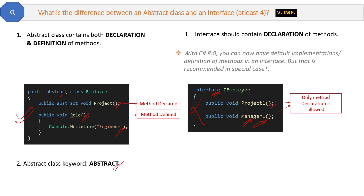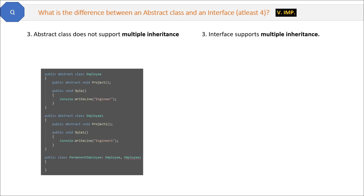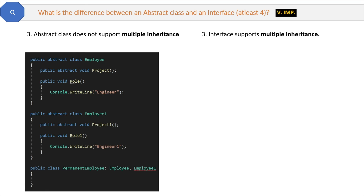One very important difference is that abstract classes do not support multiple inheritance in C#, whereas interfaces support multiple inheritance. Let me show you in code — when we try multiple inheritance via abstract class, we get a compile-time error when deriving from multiple classes, such as Employee and EmployeeOne, in the derived class PermanentEmployee.